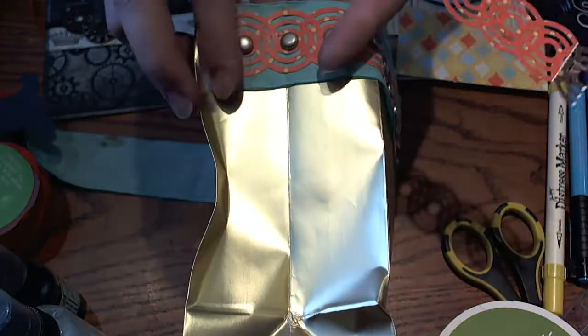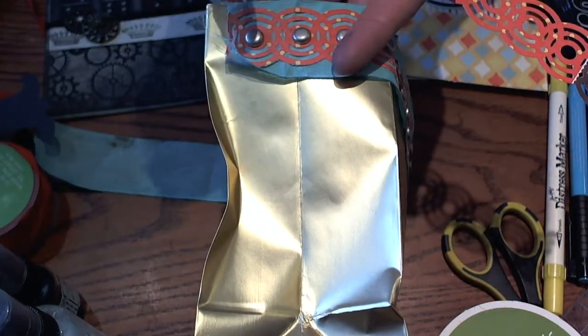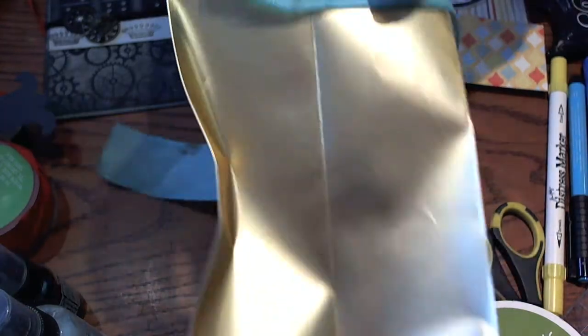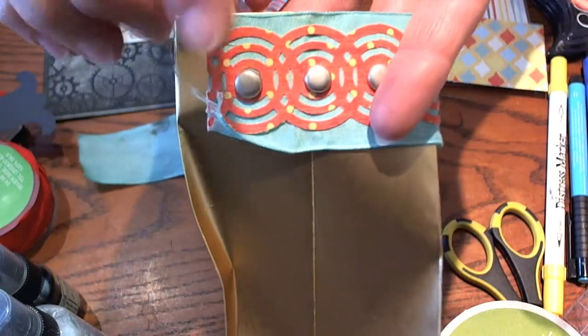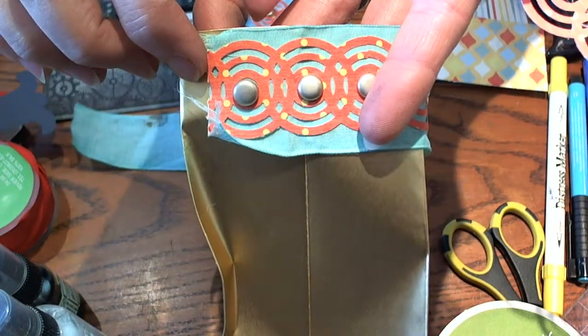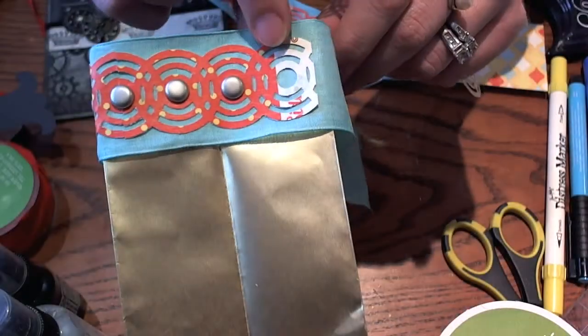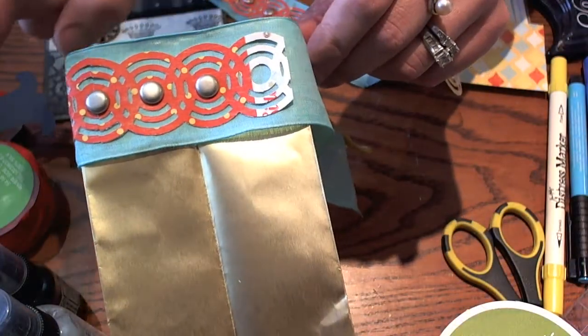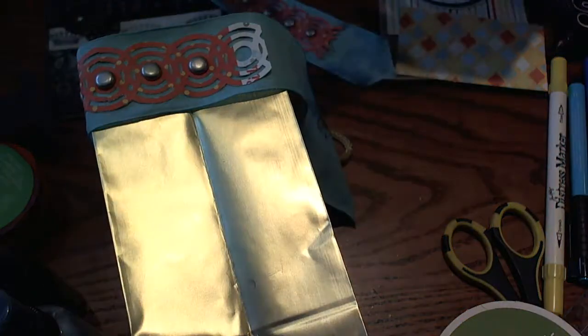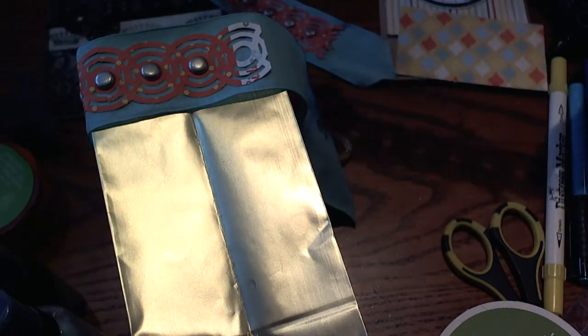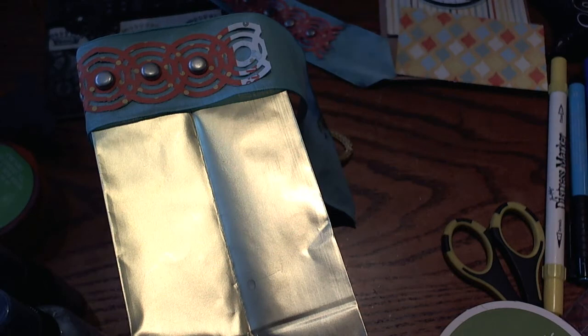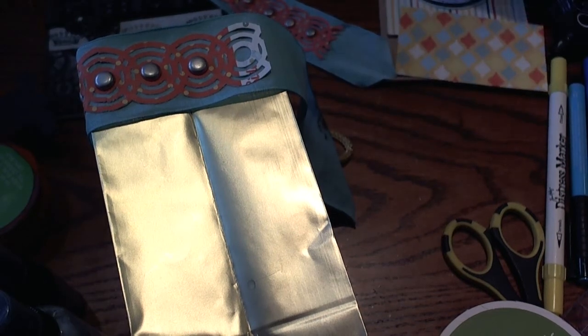What I did was I went ahead and started, and I decided to use brads to hold my ribbon and my trim to the bag. I went ahead and got started so that this wouldn't take so long. I went ahead and punched the whole strip of paper. I didn't cut off the logo or anything, just so that it could layer more easily.